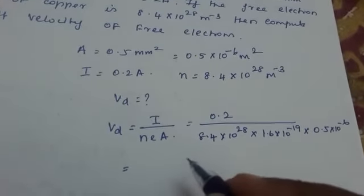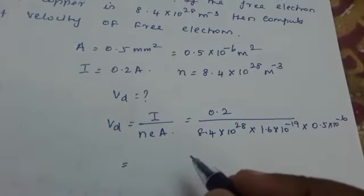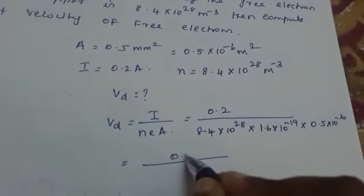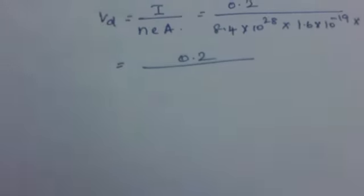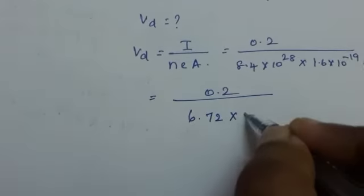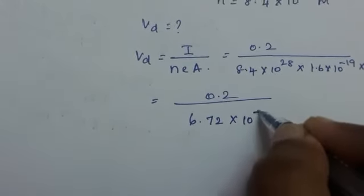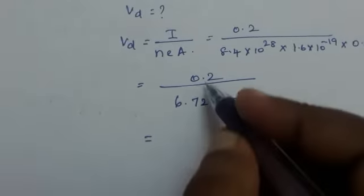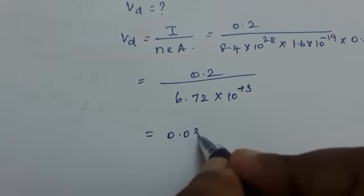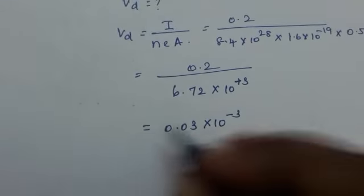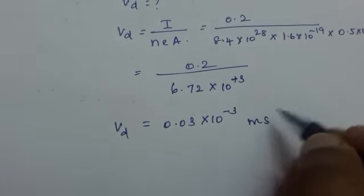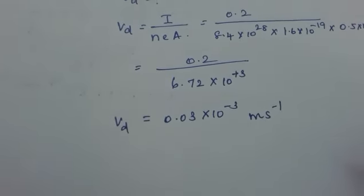Substituting all values, we get 0.2 divided by 6.72 × 10³, which equals 0.03 × 10⁻³ meters per second. The drift velocity has units of meters per second.